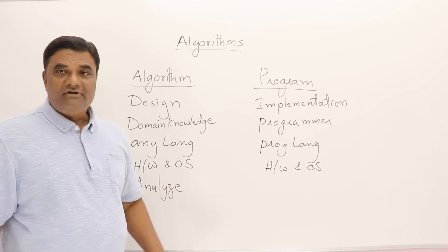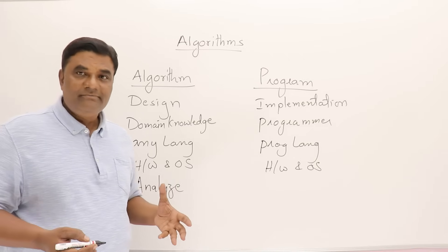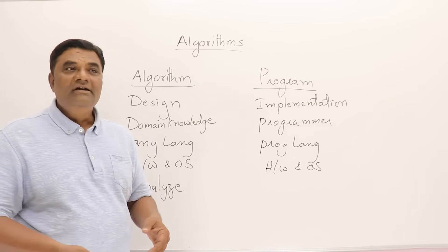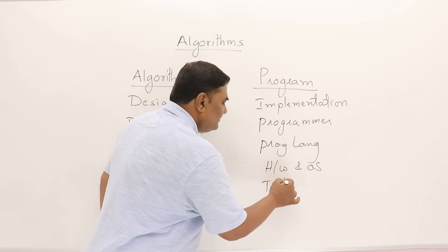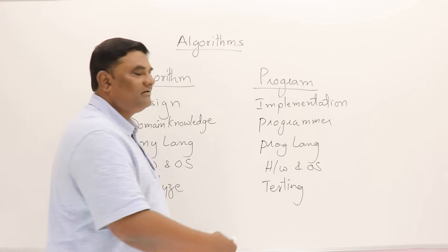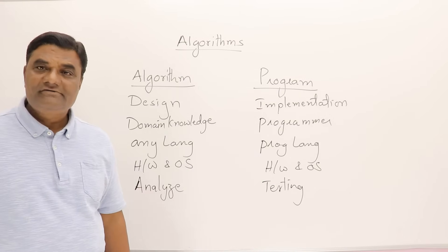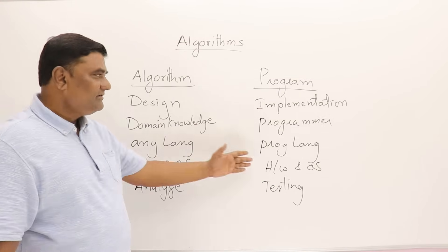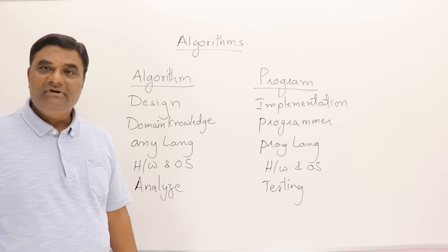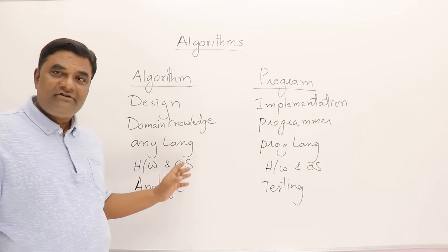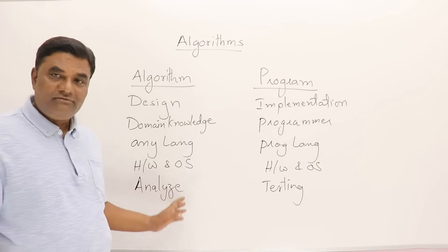What do we do with the program? So we don't have to study the program. Already program is there. Just run it and check it. So we do testing. Testing of the programs. That's it. These are a few differences between algorithm and program. These differences will help you understand what are algorithms.